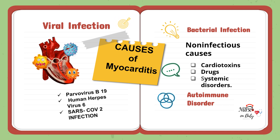Sample ng virus na pwede mag-cause ng myocarditis is the parvovirus B19, the human herpesvirus 6, and the SARS-CoV-2 infection which is known as COVID-19. What are the manifestations and symptoms? Possible kang magkaroon ng fever, chills, sore throat, nasal congestion, runny nose, and cough.